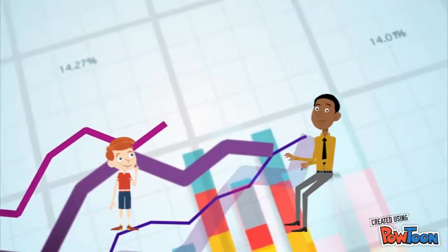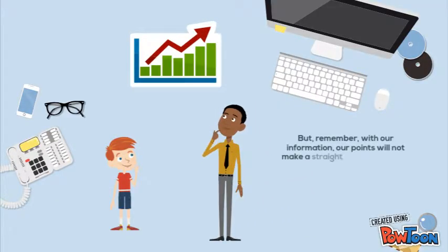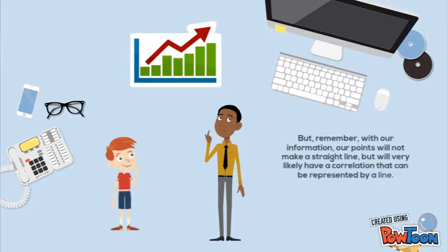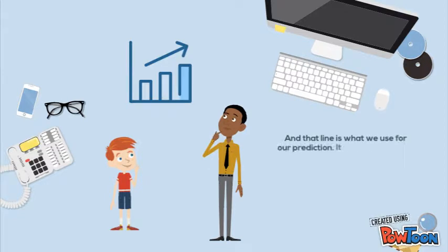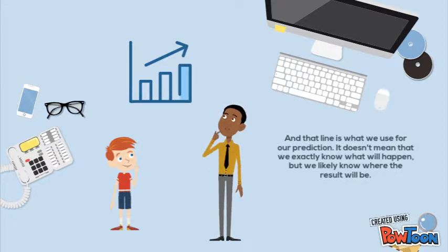Yes, sir. But remember, with our information, our points will not make a straight line, but will very likely have a correlation that can be represented by a line. And that line is what we use for our prediction. It doesn't mean that we exactly know what will happen, but we likely know where the result will be.